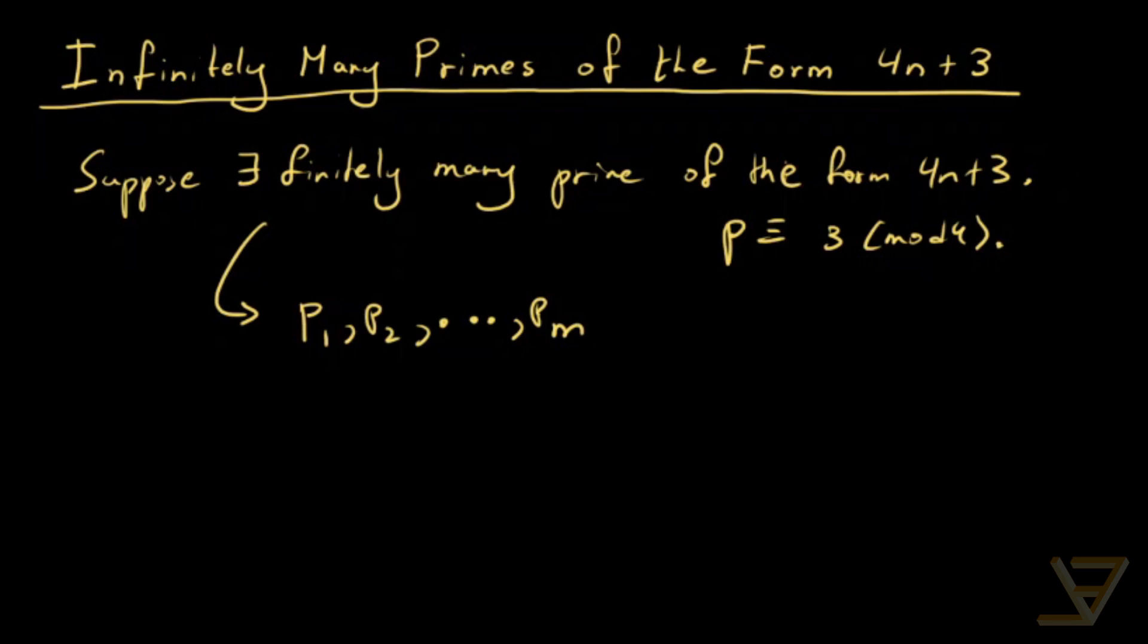We're going to let N equal the product of these primes: p1 times p2 all the way through to pm. We're going to let M equal 4N minus 1, so that's 4p1p2...pm minus 1. And we're going to be working with this M quite a bit.